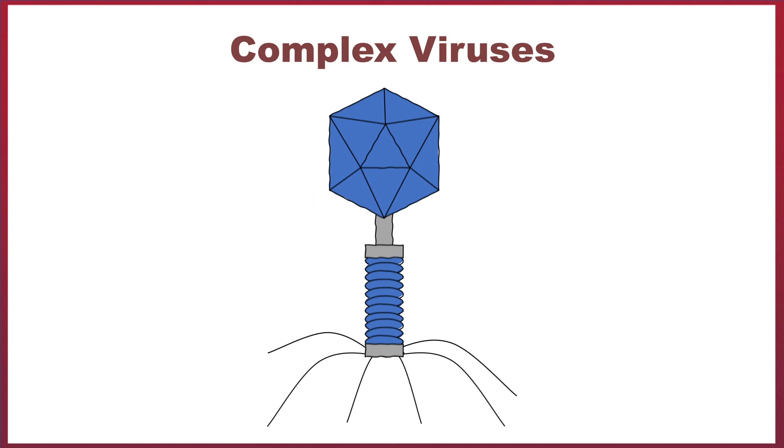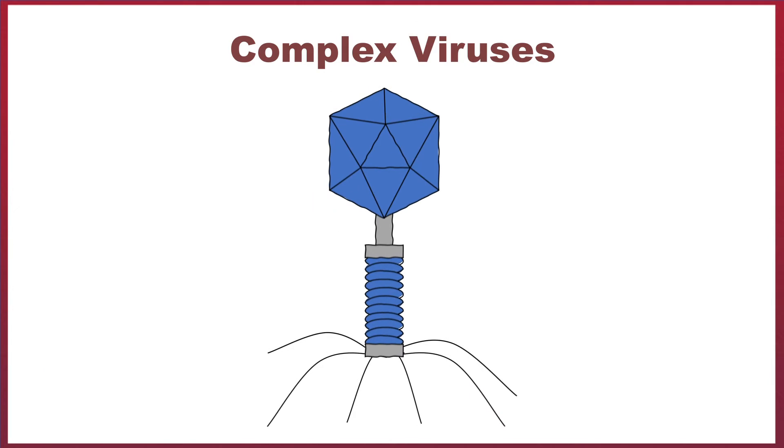And finally, we have complex viruses, such as the bacteriophage virus. These are possibly one of the weirdest looking microbes, almost like something out of the War of the Worlds. These have neither helical or polyhedral forms. Their RNA is contained within a protective capsid, or head.